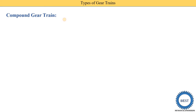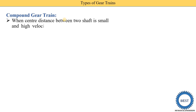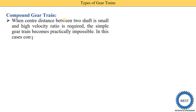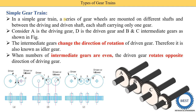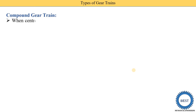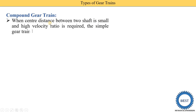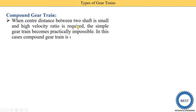The second is the compound gear train. When the center distance between two shafts is small, the distance between driving and driven gears increases in a simple gear train. If you want to reduce the center distance — means install the gear train in a small space — and a high velocity ratio is required, the simple gear train becomes practically impossible. In this case, we need to use the compound gear train.